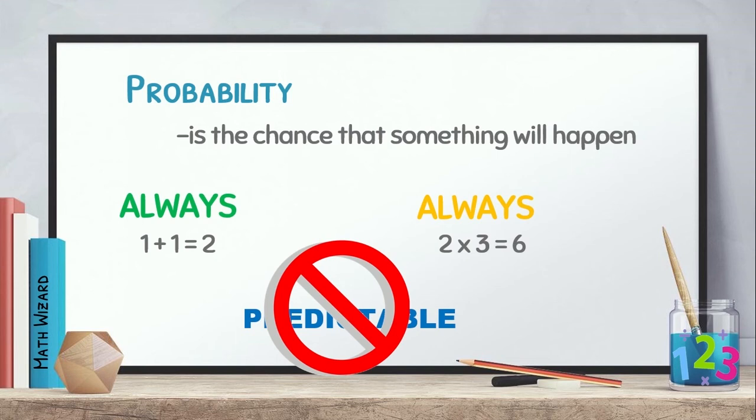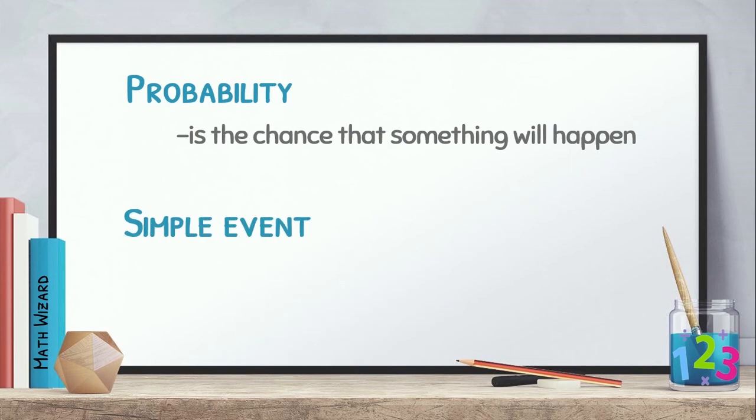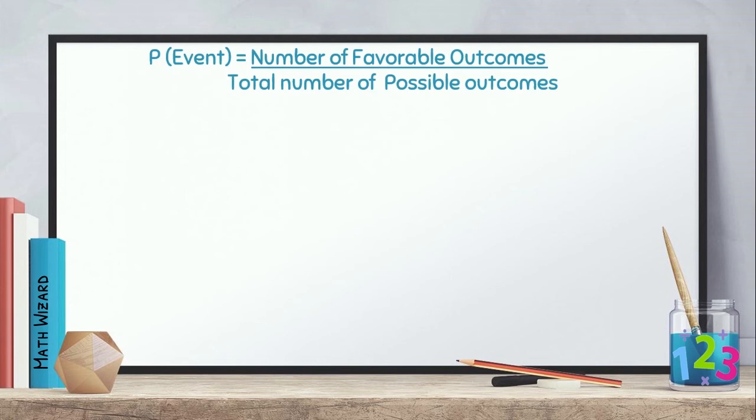Kaya, gumagamit tayo ng word na probability. How likely something is going to happen. Next, define naman natin ano ibig sabihin ng simple event. Pag sinabi natin simple event, it is an event which has a single outcome. The formula for simple event is P of event equal to the number of favorable outcomes divided by the total number of possible outcomes. The numerator is the number of favorable outcomes while the denominator is the total number of possible outcomes.